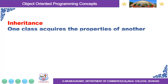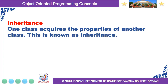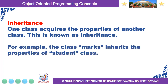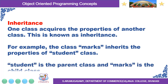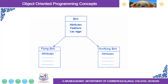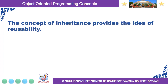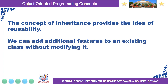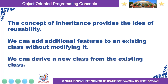The next concept is Inheritance. One class acquires the properties of another class — this is known as inheritance. For example, the class marks inherits the properties of the student class. Student is the parent class and marks is the child class. This represents the concept of inheritance: Bird is the parent class and it contains two children classes — flying bird and non-flying bird. The attributes of the bird class are inherited in the flying bird and non-flying bird classes. The concept of inheritance provides the idea of reusability. We can add additional features to an existing class without modifying it, and we can derive a new class from the existing class.